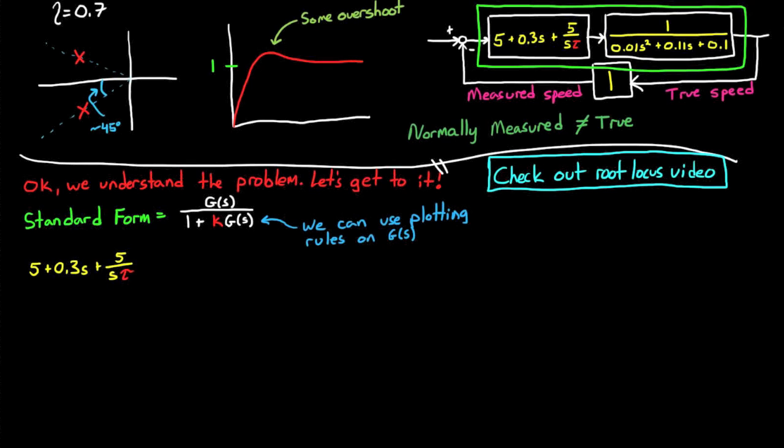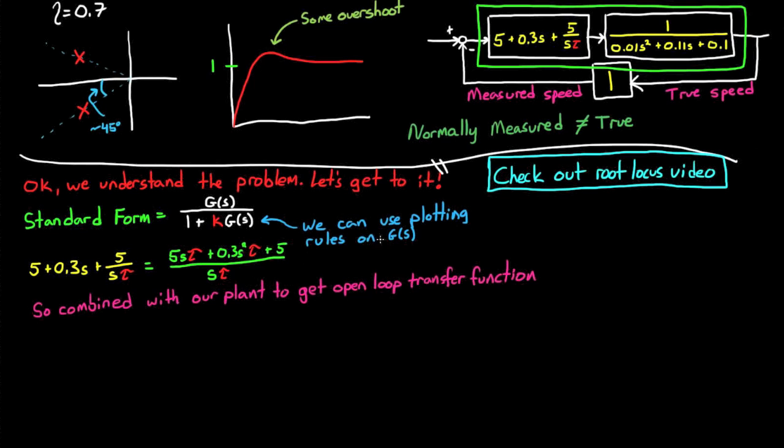Combining these two transfer functions is relatively straightforward, but you'll need to rearrange them using some algebra. The three components of the PID controller have a common denominator of s times tau, and when you multiply it with the plant, you get this third order transfer function. Again, this is the total open loop transfer function of our system.